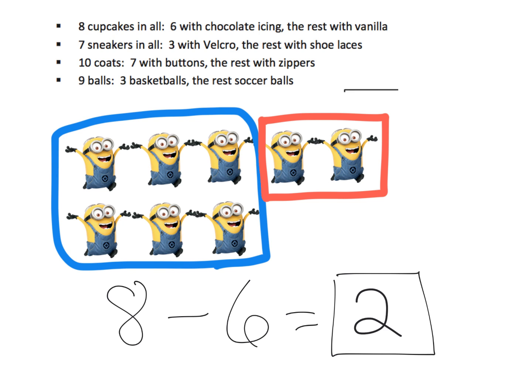And the idea is we could model that with a number bond by saying we have eight minions total, six of them play the trombone, and the remaining minions play the clarinet. And so the model would look like this. If we were going to use a number bond, the number sentence would look like this.